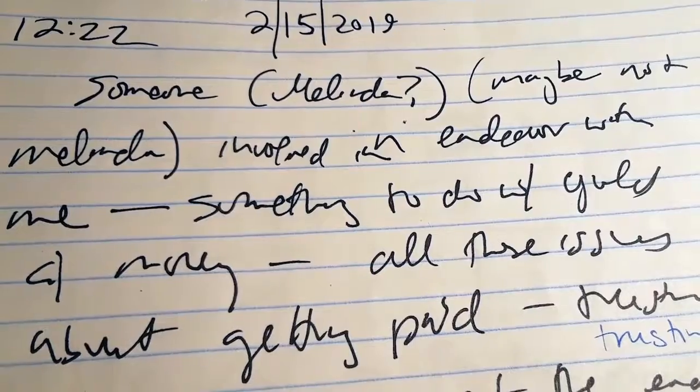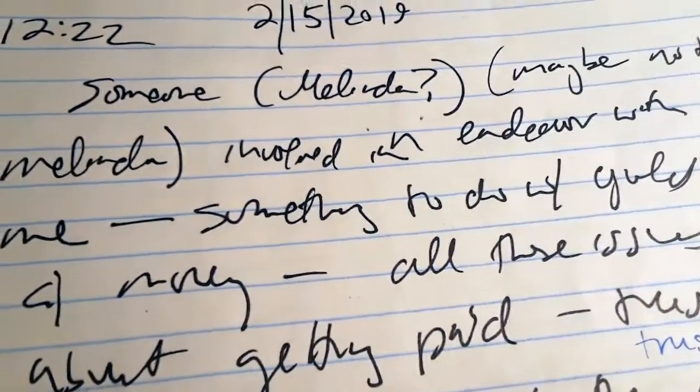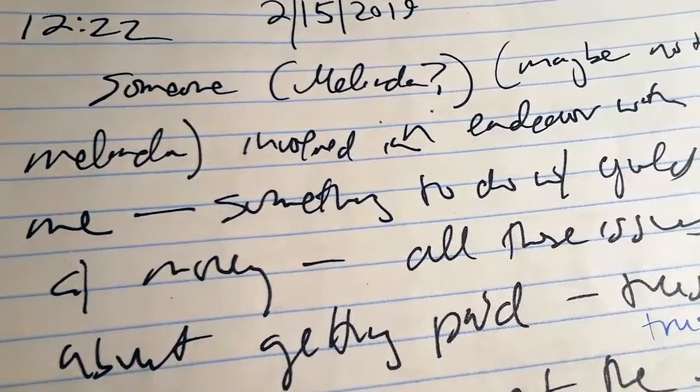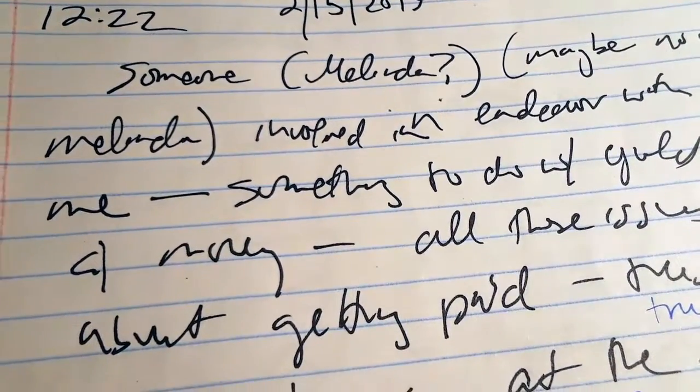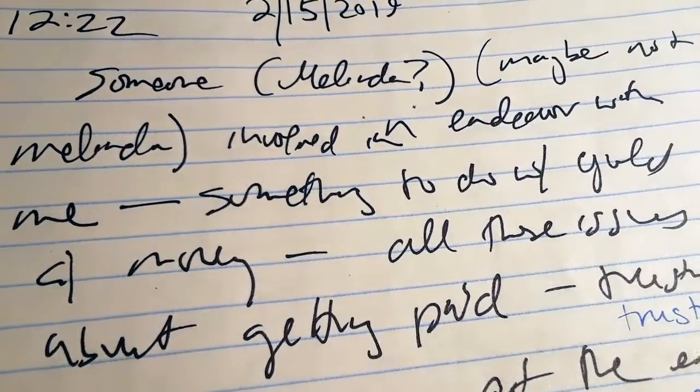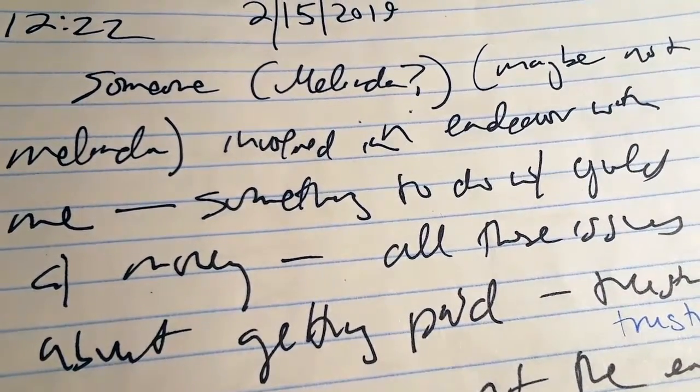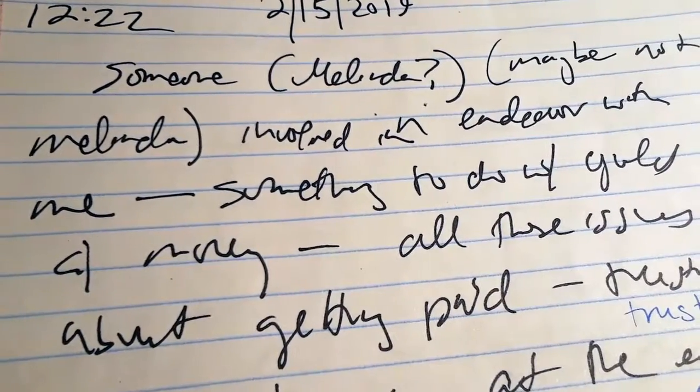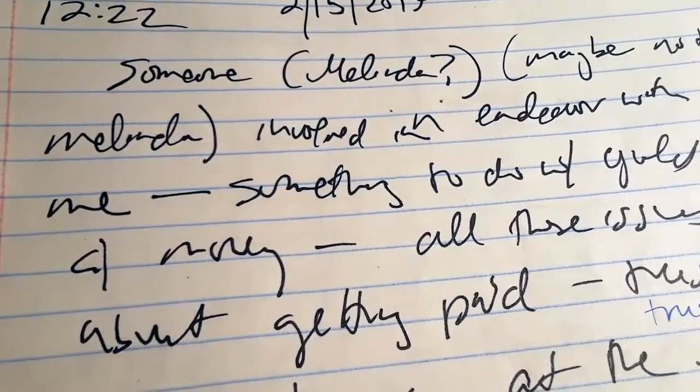So the first dream is someone, I think it might be Melinda but it might not be Melinda. Melinda was sort of in a dream from last night and she's sort of in the background of the dream from the night before last and in the background of the dream from last night.